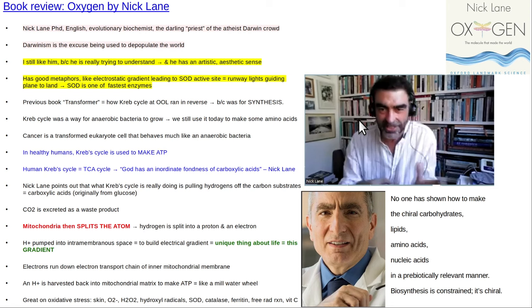His main perspective is trying to understand things from an origin-of-life, evolution-of-the-world viewpoint. He'll go back to what he perceives as the beginning of time — hydrogen vents coming up through the bottom of the ocean — and he thinks that was a mechanism to get hydrogen to mix with CO2. My favorite part was when he talks about mitochondria, free radical reactions, and anaerobic bacteria that ran Krebs cycle in reverse, using it for synthesis — adding CO2s to make molecules rather than releasing them.